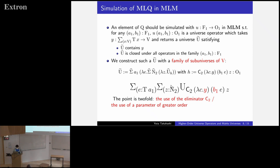So, if Z is equal to 0, we obtain a sub-universe containing Y. And if Z is equal to 1, we obtain a sub-universe which is closed under all operators in the family A1B1. And another point is the use of parameter of greater order. Here, we use parameter B1, which is a family of operator of order 1.